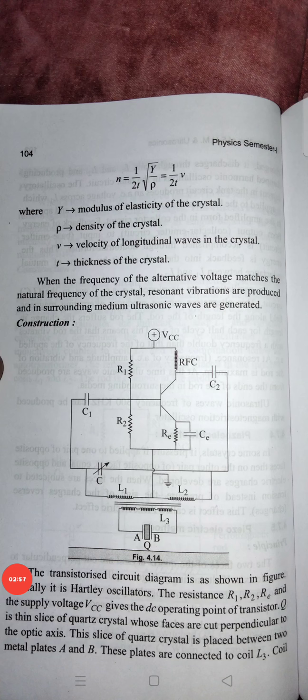In this formula, Y stands for Young's modulus, or modulus of elasticity of the crystal, and ρ is the density of the crystal. V is the velocity of the longitudinal wave in the crystal, and l is the thickness of the crystal. When the frequency of the alternating voltage matches the natural frequency of the crystal, resonance occurs and the crystal vibrates, producing ultrasonic waves in the surrounding medium.